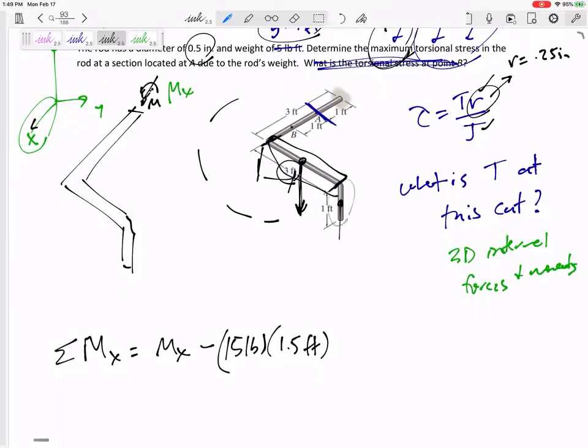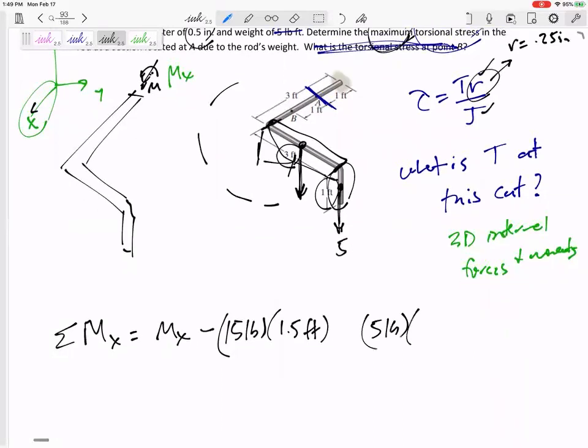the weight of that section, pointed straight down. If it's one foot and it's five pounds per foot, that would be five pounds. So this five-pound section has a moment arm of three feet, also creating a negative moment. But what about the weight of this section? It wouldn't create an X moment, correct? It wouldn't create an X moment.